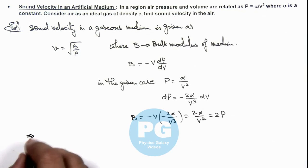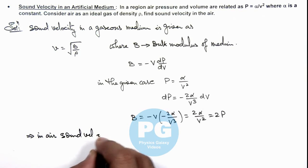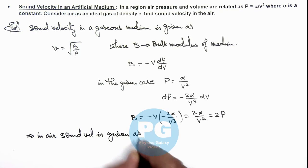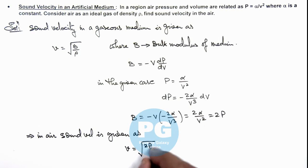This implies in air, sound velocity is given as v equals root of bulk modulus - this we can substitute as 2P. So this is square root of 2P by ρ, this is the result of this problem.